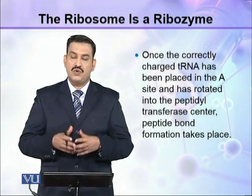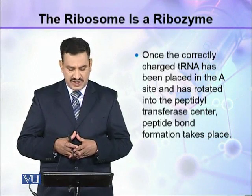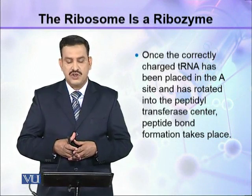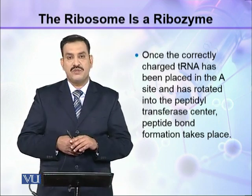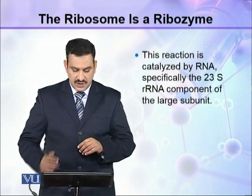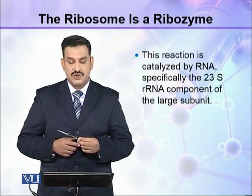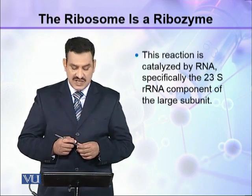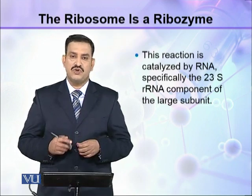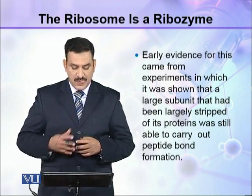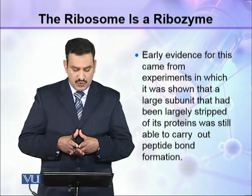Once the correctly charged tRNA has been placed in the A site and has rotated into the peptidyl transferase center, peptide bond formation takes place. This reaction is catalyzed by RNA, specifically the 23S rRNA component of the large subunit of the ribosome.